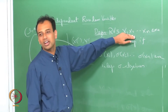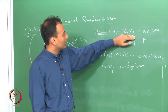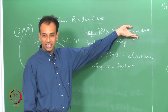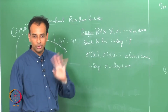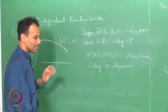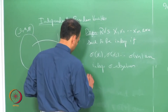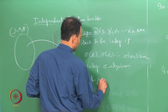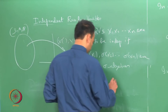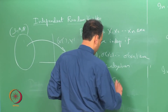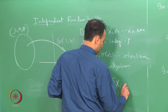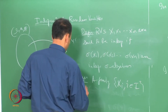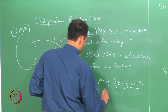So far, in elementary treatments, you would have seen that x1, x2, ..., xn are independent random variables if the joint CDF of all of them factors into the product of the individual marginals. Now I am going to say something a little more: a family of random variables is defined more generally.